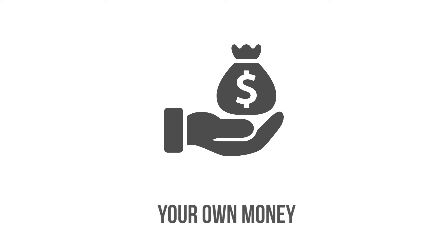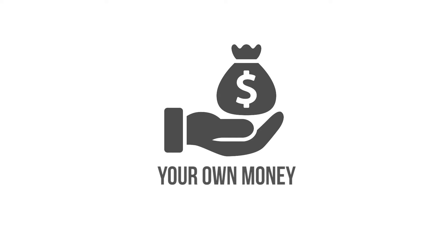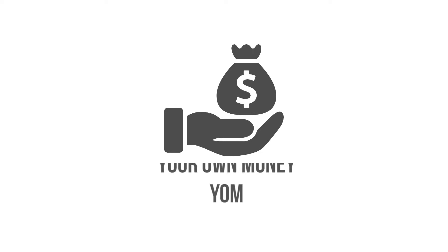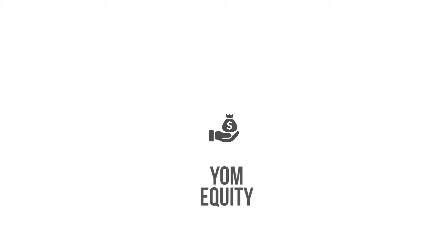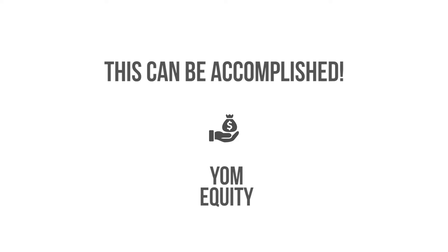The value of the cash flows that remain have to be paid for with YOM — Y-O-M — or your own money, otherwise known as equity. Naturally, you're probably thinking that you want to show up with as little YOM as possible. There are ways to accomplish this, and I will discuss this in the final chapter.